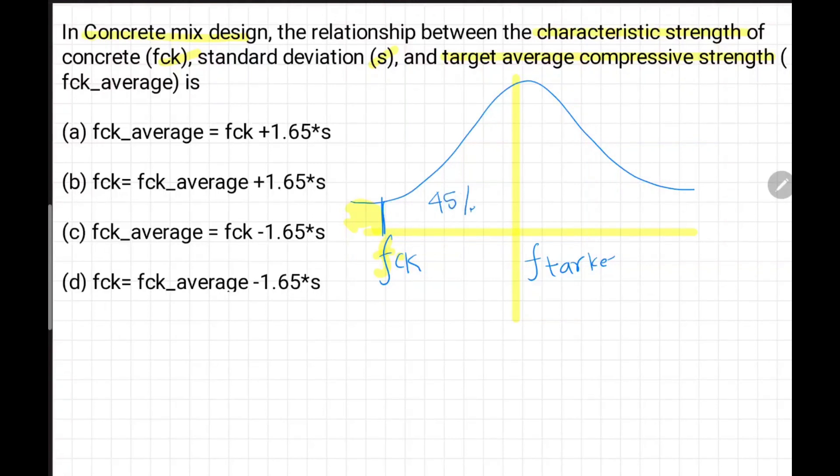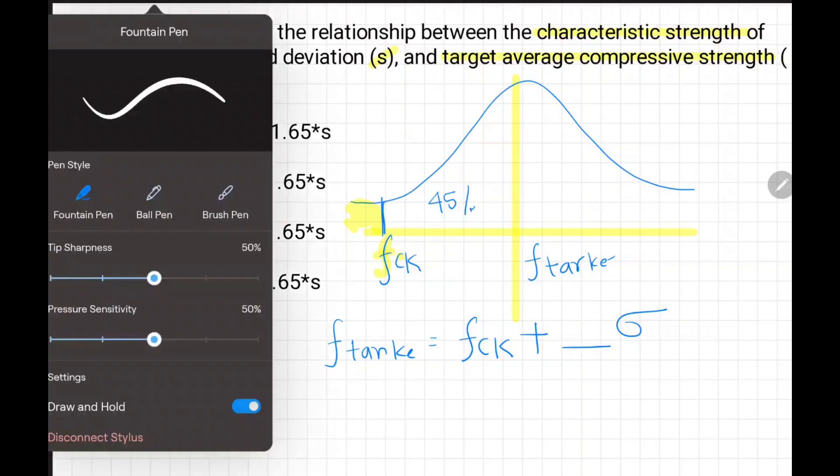The relationship is: target will be fck plus some constant times standard deviation S or sigma. We can see the target equals characteristic plus 1.65, so this one is the correct answer.